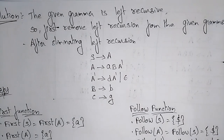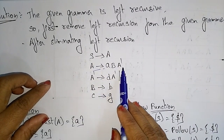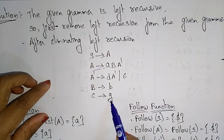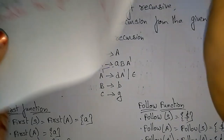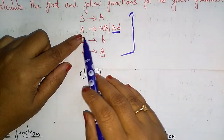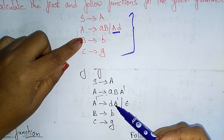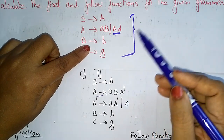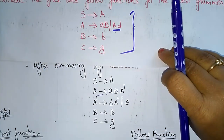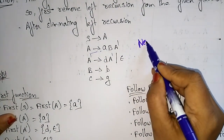After eliminating the left recursion, the final grammar is: S → A, A → BA', A' → DA' | ε, B → B, C → G. The production A → AB is renamed introducing A', and A' → DA' | ε, where epsilon eliminates the recursion. This is the new grammar on which we will construct the LL(1) parser.